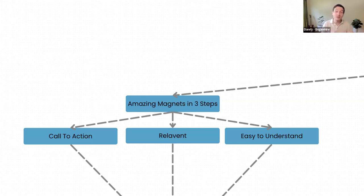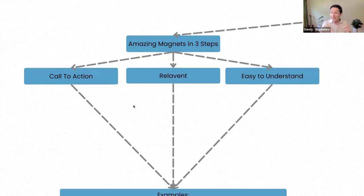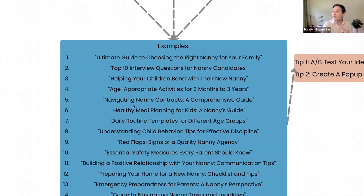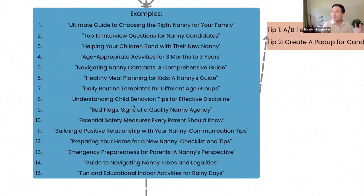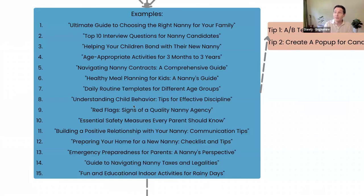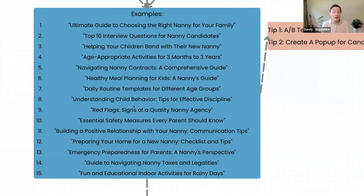Lead magnets don't have to be crazy. Mine is a 20-page booklet, nicely formatted. But here are some great examples for anyone in the nanny industry: top 10 interview questions for nanny candidates. I would give my email to just get 10 great interview questions — I've never interviewed a nanny before, I've come to your website and I already kind of trust you. You don't have to over-complicate it. One page of 10 questions — you can whip it up immediately and give it away.